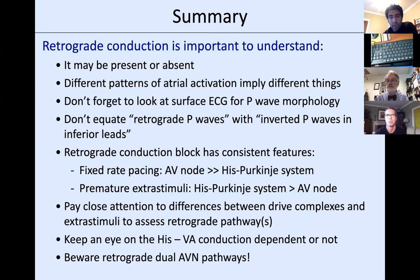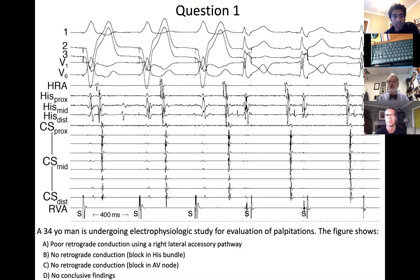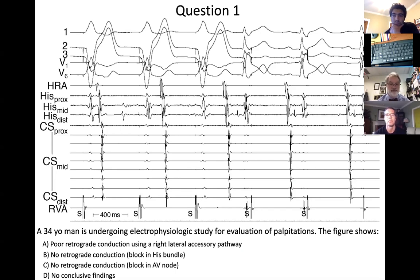Key teaching points to remember: with fixed-rate or slowly incremental pacing, the AV node fatigues before the His-Purkinje system; with premature extra stimuli, the His-Purkinje system fatigues more rapidly. Use this to distinguish accessory pathways from normal conduction. Keep an eye on the His—whether VA conduction depends on it or not will be your friend. Beware of retrograde dual AV nodal pathways. Time for audience response questions—question one involves intracardiac and surface recordings of a 34-year-old man undergoing EP study for palpitations.